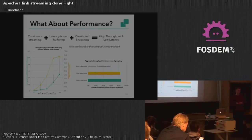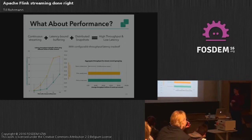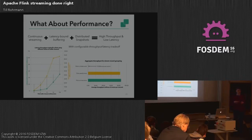We also measured the effect of the checkpointing mechanism on overall throughput. For the same job with a network shuffle, we fixed the buffer timeout at 50 milliseconds and compared throughput without checkpointing versus with exactly-once checkpointing enabled. Without checkpointing we could achieve around 86 or 87 million events per second. With exactly-once processing guarantees enabled, we had 82 million events per second. So by sacrificing approximately 4% of throughput, you achieve exactly-once processing guarantees — which is a really great result.